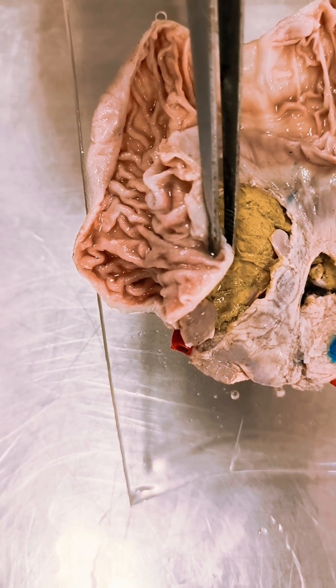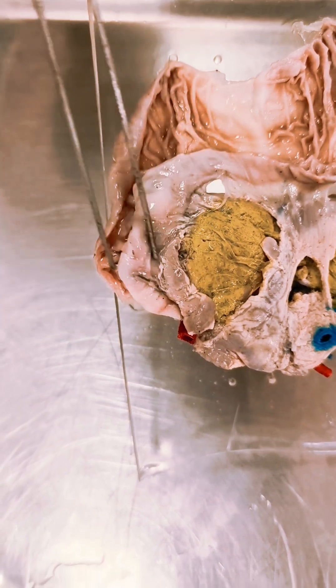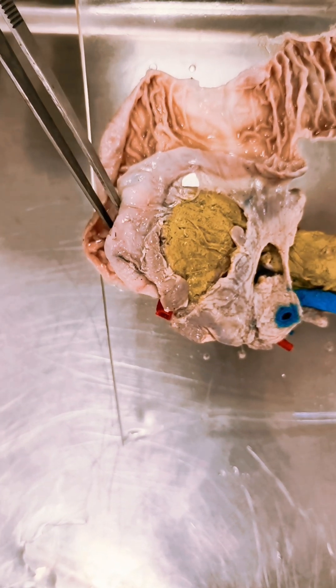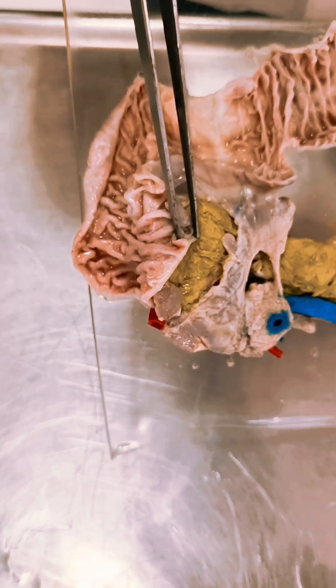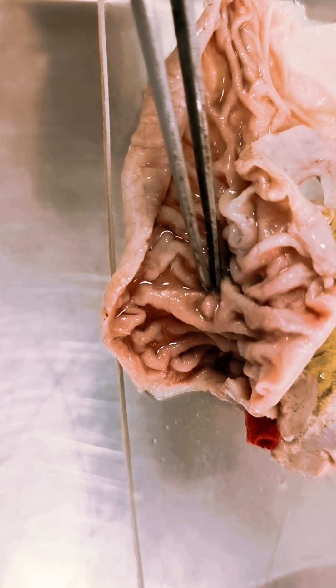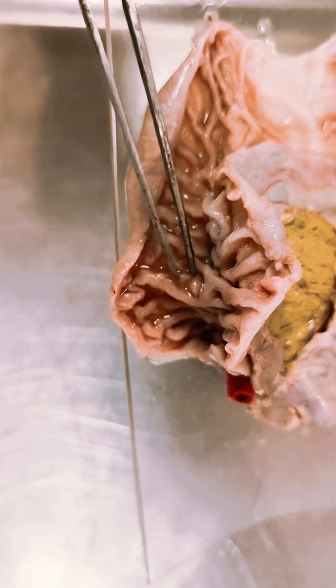In the second part of the duodenum, the common bile duct and pancreatic duct join together and open into the second part of the duodenum. This is called the ampulla of Vater.